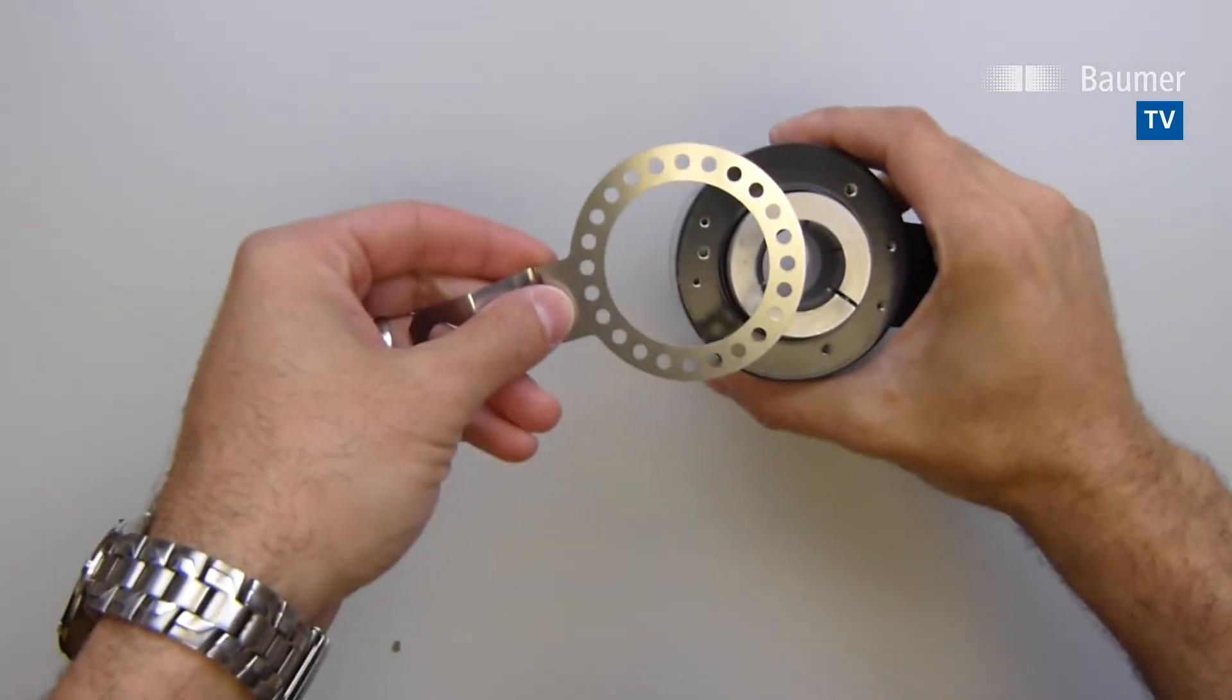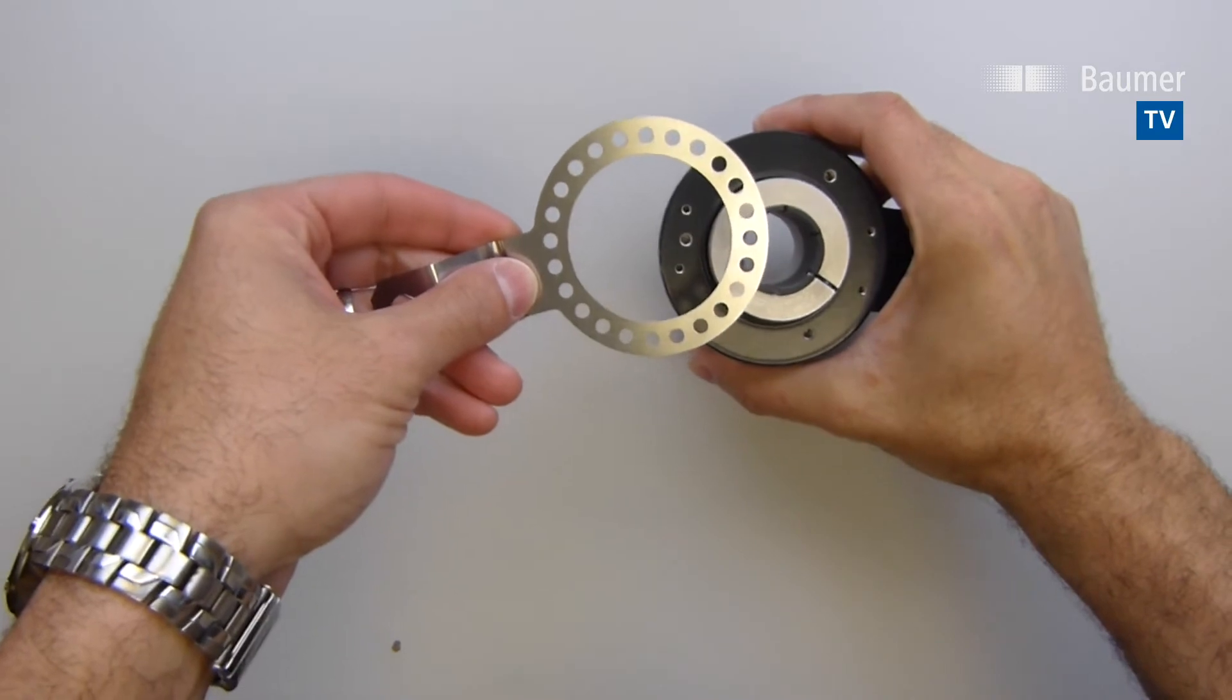Then just mount the encoder using the REM kit, set the programmable zero point, and get back to business.